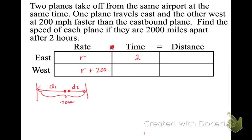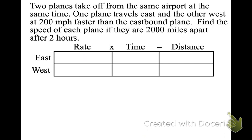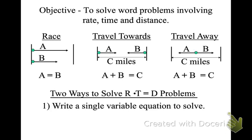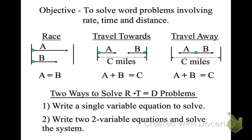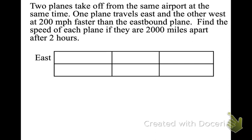This is one of those cases where distance 1 plus distance 2 equals the total distance, just like when they travel away from each other. D1 plus D2 equals the total. I want you all to get used to sketching it out like that, making that little diagram to show what's happening and make sense of the problem.